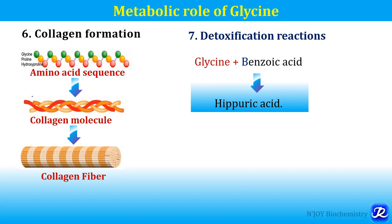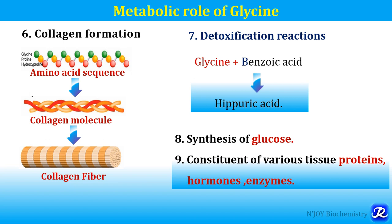Glycine also has an important role in detoxification reactions. Glycine combines with benzoic acid to form hippuric acid, which is then excreted. Glycine is a glucogenic amino acid because it is involved in the synthesis of glucose through serine — serine is converted to pyruvate, and pyruvate is then involved in the synthesis of glucose. Glycine is also a constituent of various tissue proteins, hormones, and enzymes.